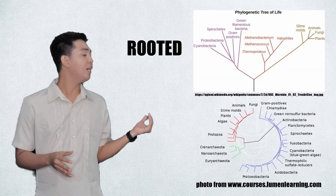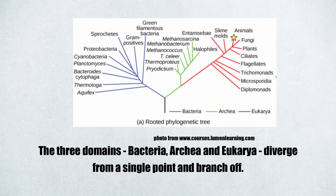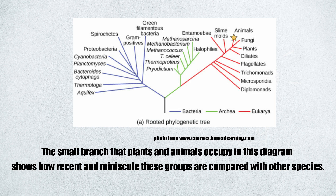Many phylogenetic trees have a single lineage representing a common ancestor. A phylogenetic tree can be illustrated as rooted or unrooted. Scientists call such trees rooted, which means there is a single ancestral lineage, typically drawn from the bottom or left, to which all organisms represented in the diagram relate. Notice in the rooted phylogenetic tree that the three domains — bacteria, archaea, and eukarya — diverge from a single point and branch off. The small branch that plants and animals, including humans, occupy in this diagram shows how recent and minuscule these groups are compared with other organisms.